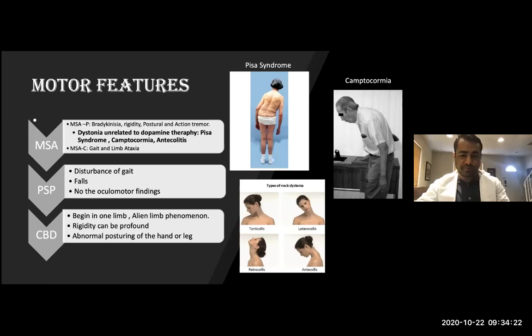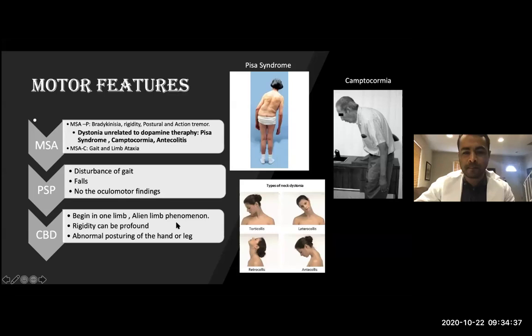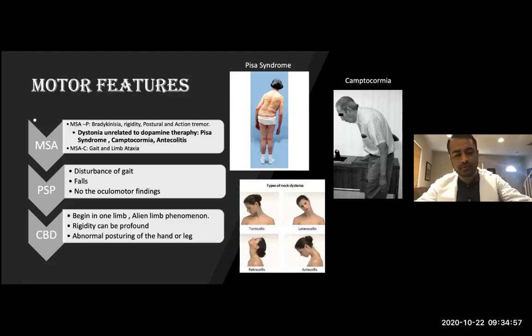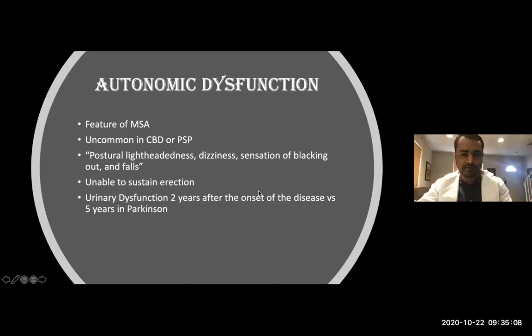CBD has one of the most interesting symptoms in neurology — something called alien limb phenomenon. It is like the arm feels outside the body, as if you cannot control it. For example, your arm acts on its own and throws things — you could hit somebody without wanting to, because your limb behaves like an alien. It is a very interesting symptom.